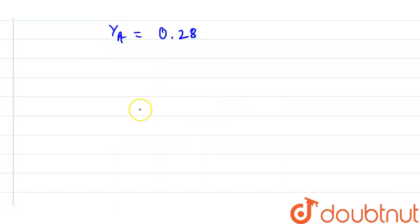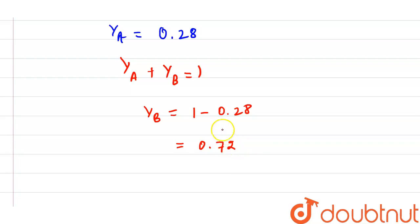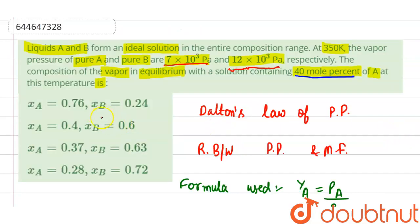Since mole fraction of A plus mole fraction of B equals 1, we get y_B = 1 minus 0.28 = 0.72. So the mole fraction of A in the vapor phase is 0.28 and the mole fraction of B is 0.72. Therefore, option four is the correct answer: x_A = 0.28 and x_B = 0.72.